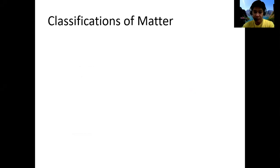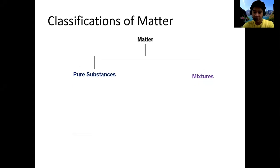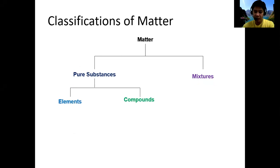So, classifications of matter: matter is divided into two major classifications — pure substances and mixtures. Let us first focus on pure substances, which are also divided into two subclassifications: elements and compounds.